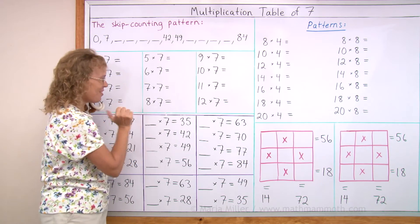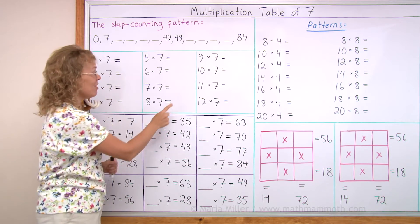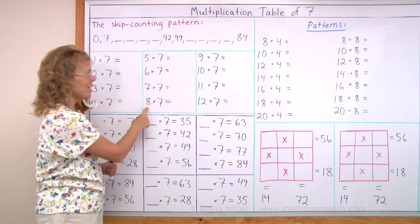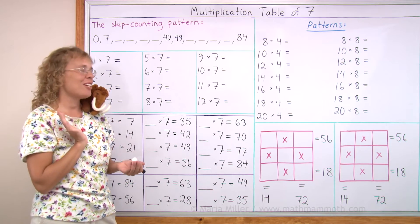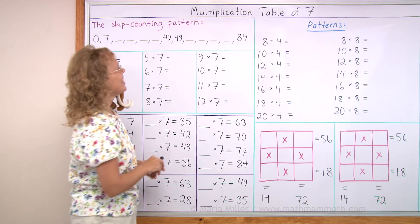Again, 5, 6, 7, 8. 56 is 7 times 8. If you remember the rhyme, it helps you. And if you forget the rhyme, it won't help you. Okay.